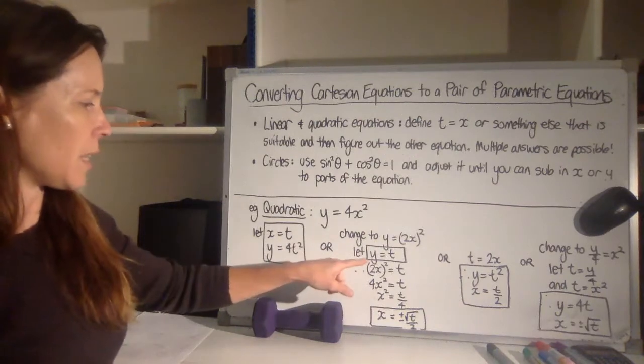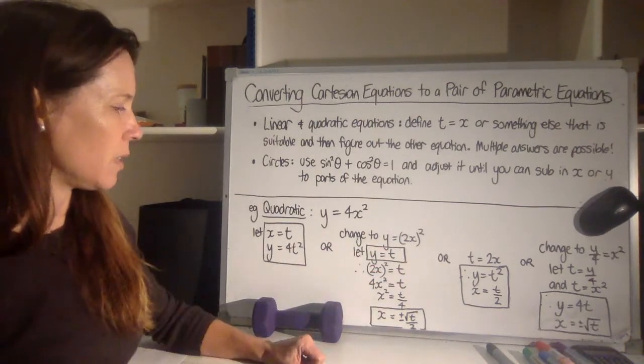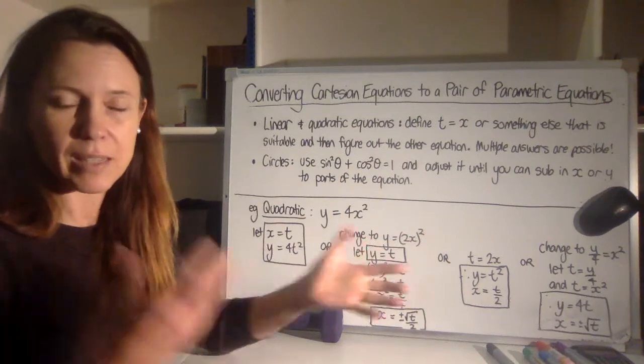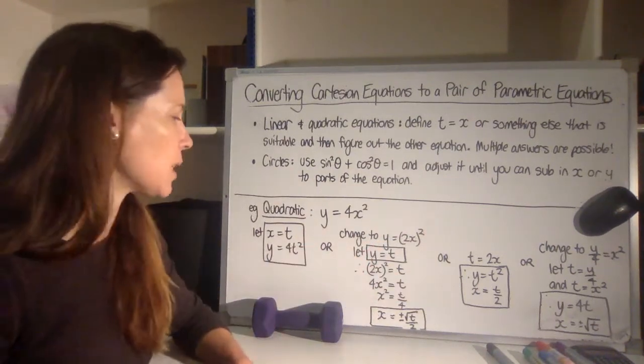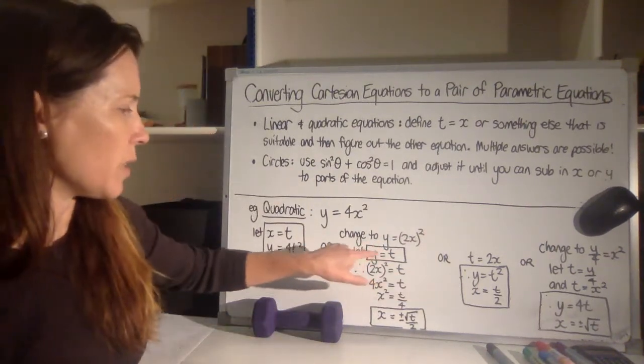I could also say let's let y be t. And if y is t, then 2x squared must also be t. So just take both sides and let them equal t. Now this one is simple and it's done. This one's a bit more complicated.